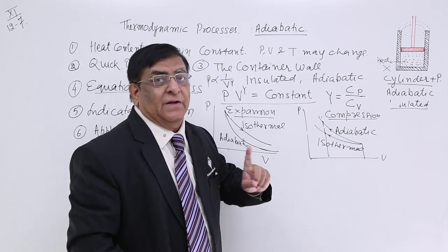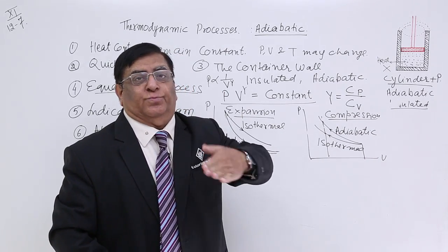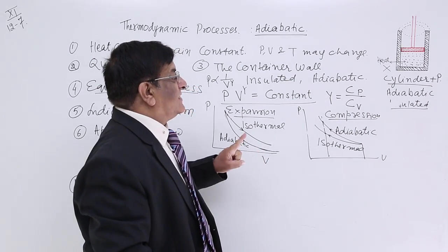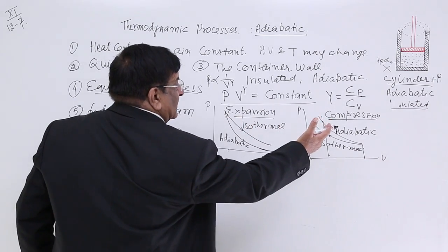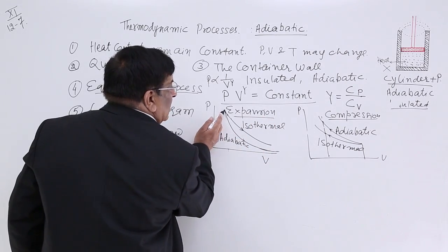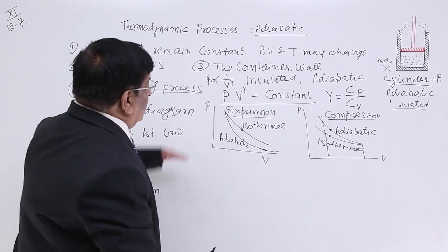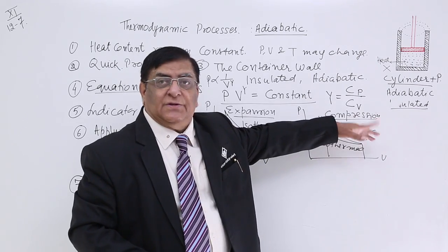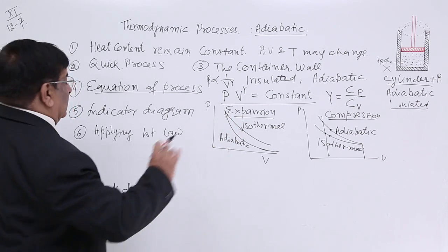But in both of them, one thing is common which you should remember, that is the slope. The slope is more in adiabatic, slope is less in isothermal, whether it is expansion or compression, it appears reverse, because here is the starting point, here is the starting point. Doesn't matter, this slope is large. Here, this slope is large. So, larger slope, adiabatic. These are the indicator diagram.